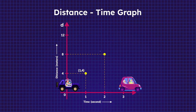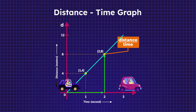As you see, the graph slopes up, indicating the increase of distance. The slope, or gradient of the graph, implies the value of speed. It's because the rise over the run of the slope represents distance over time, which is equal to the speed formula.